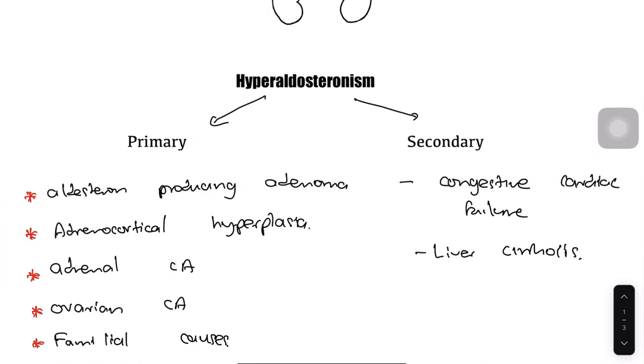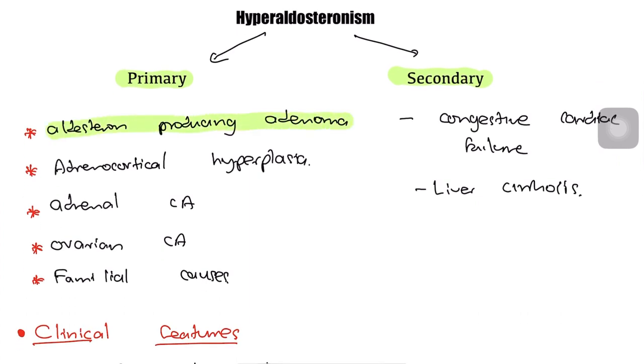Hyperaldosteronism can be divided into two parts: primary hyperaldosteronism and secondary hyperaldosteronism. Primary hyperaldosteronism is usually caused by aldosterone-producing adenoma.